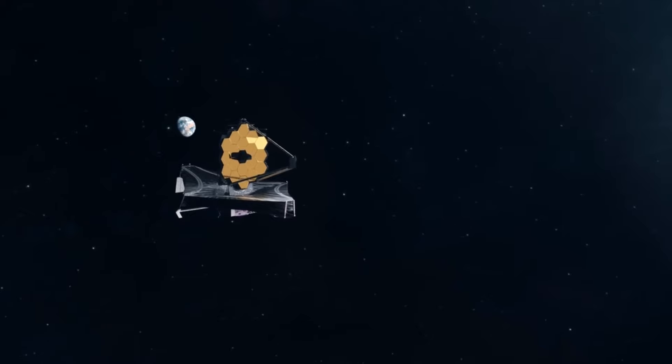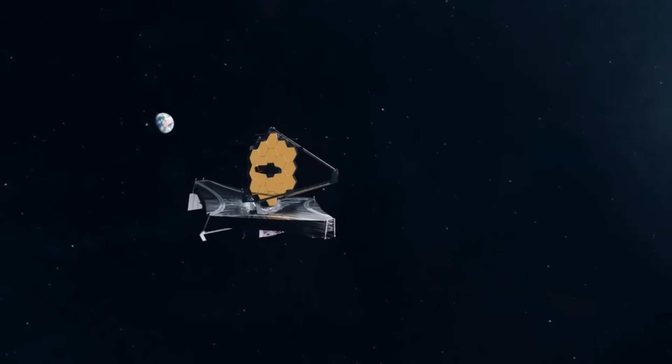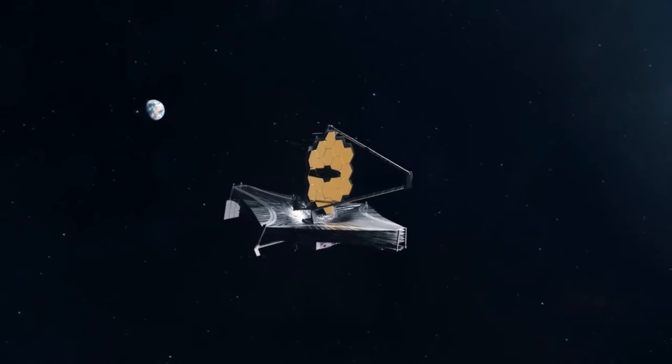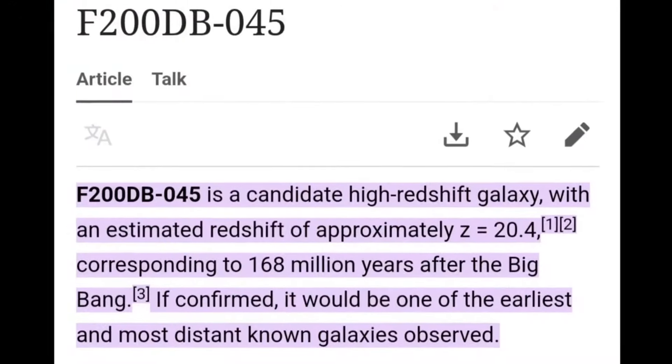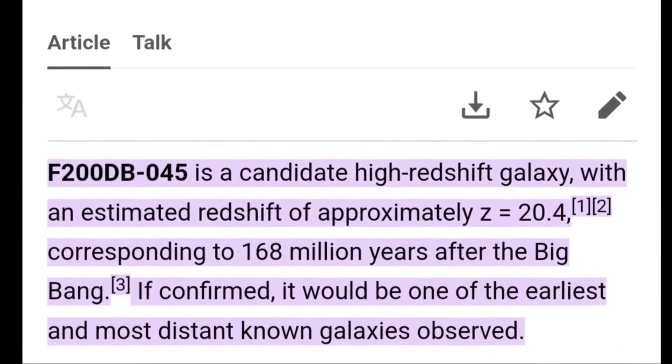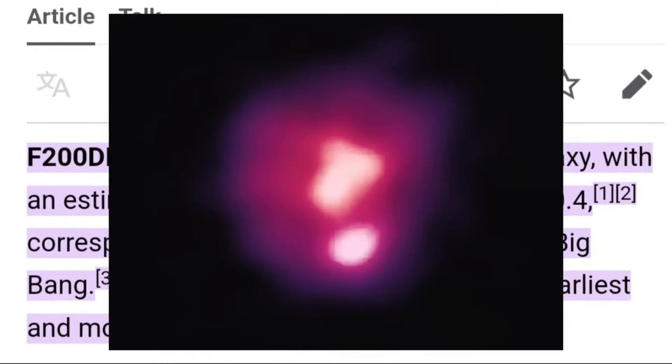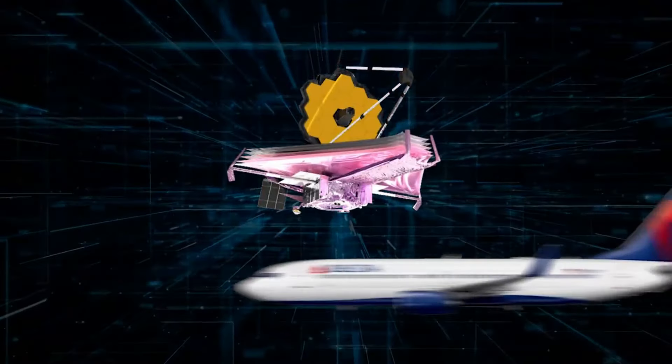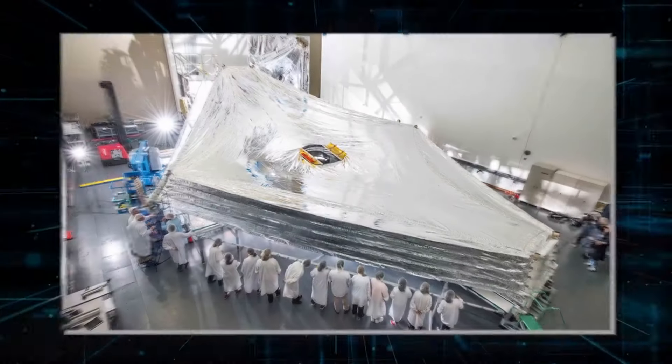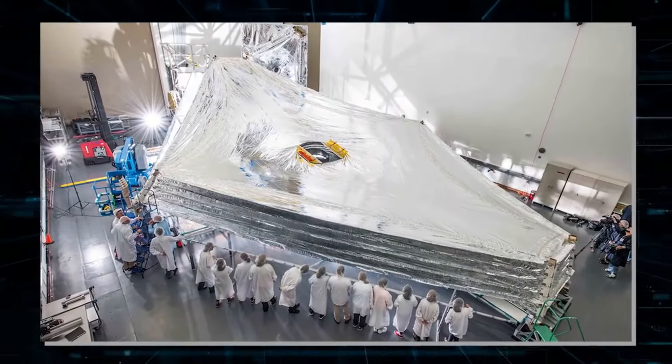The telescope faced numerous hurdles since 1996. Finally, its construction was completed in 2016 and after a set of tests, James Webb was all set to launch in March 2021. Following a series of postponements and rehearsals, it was ultimately launched on December 25, 2021 atop an Ariane 5 rocket from Kourou, French Guiana.